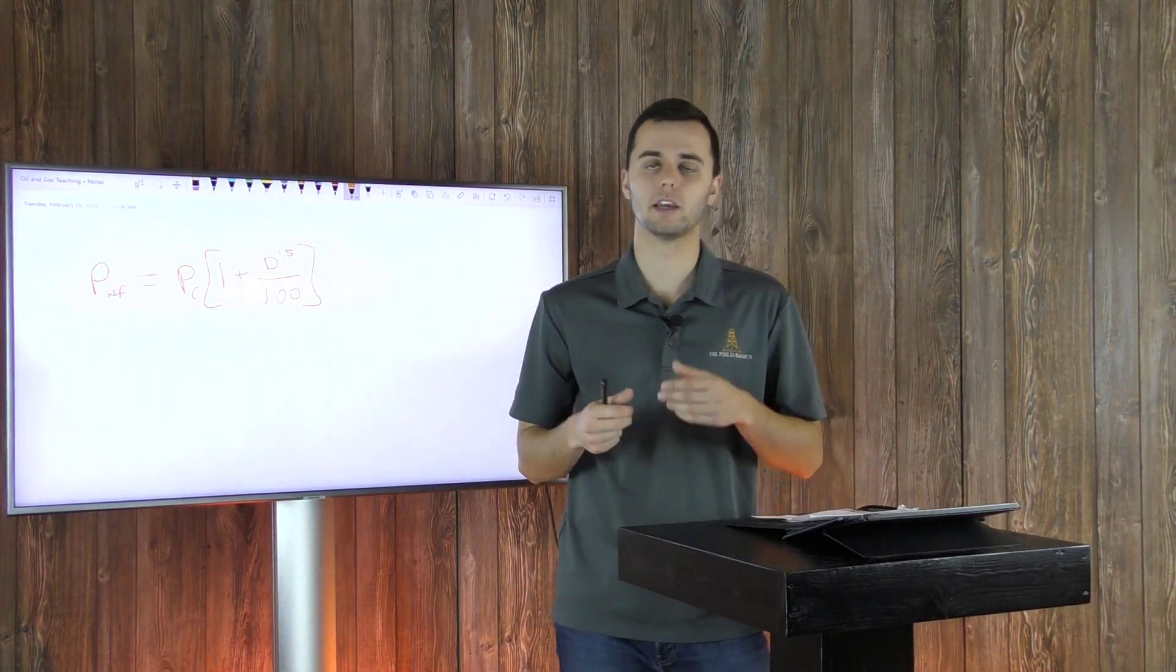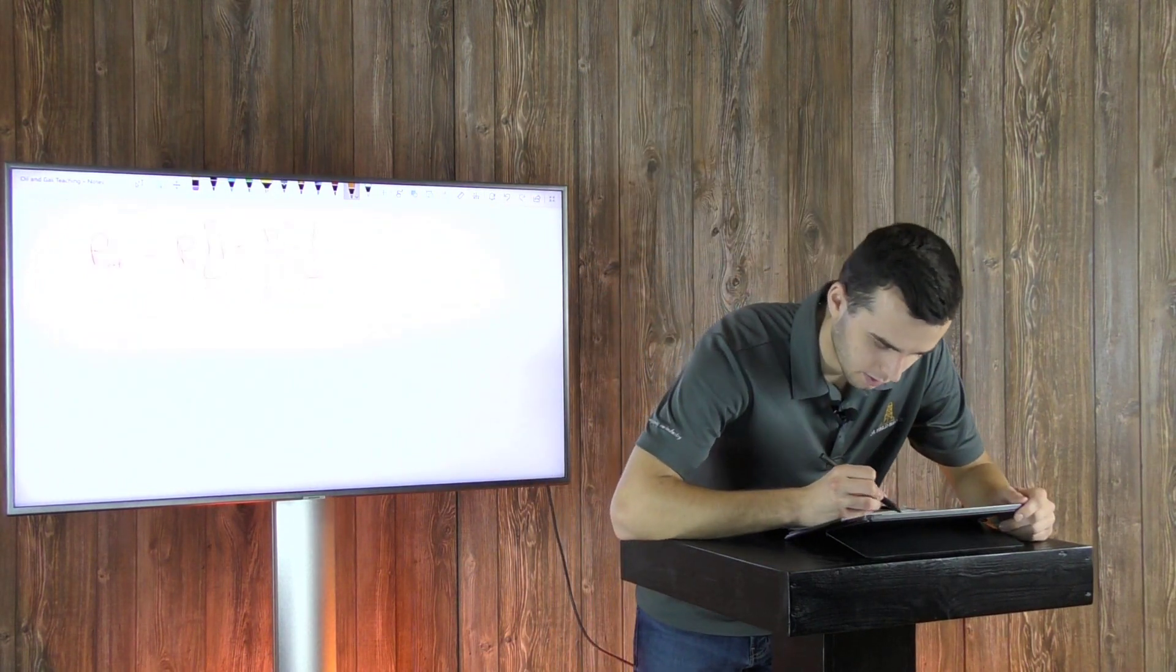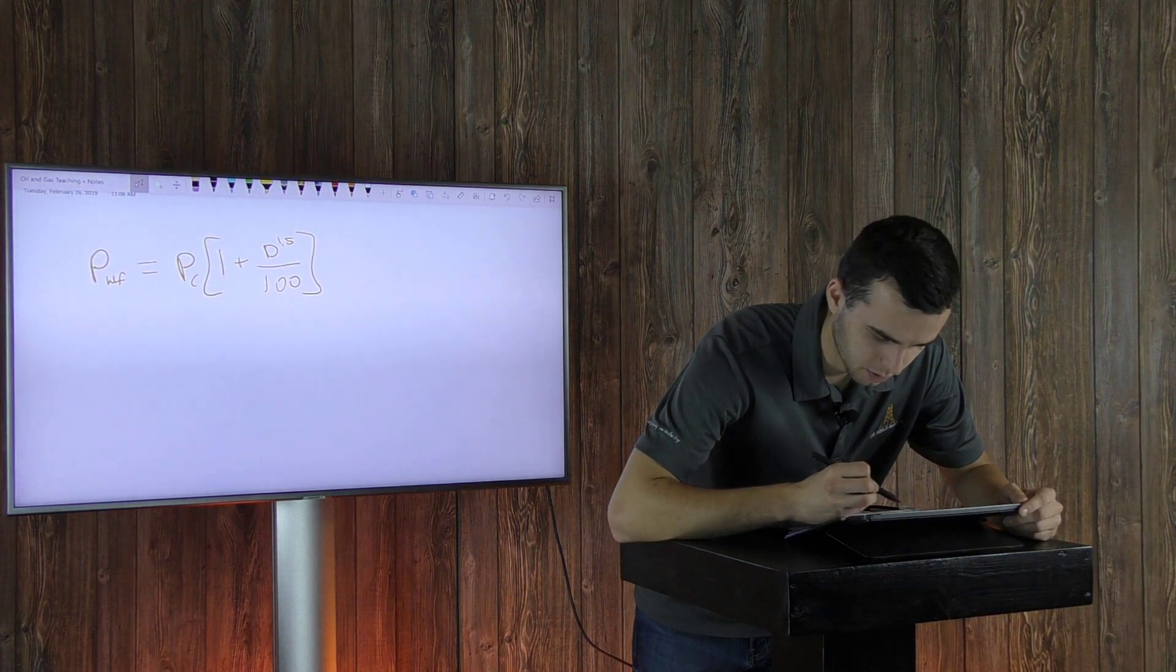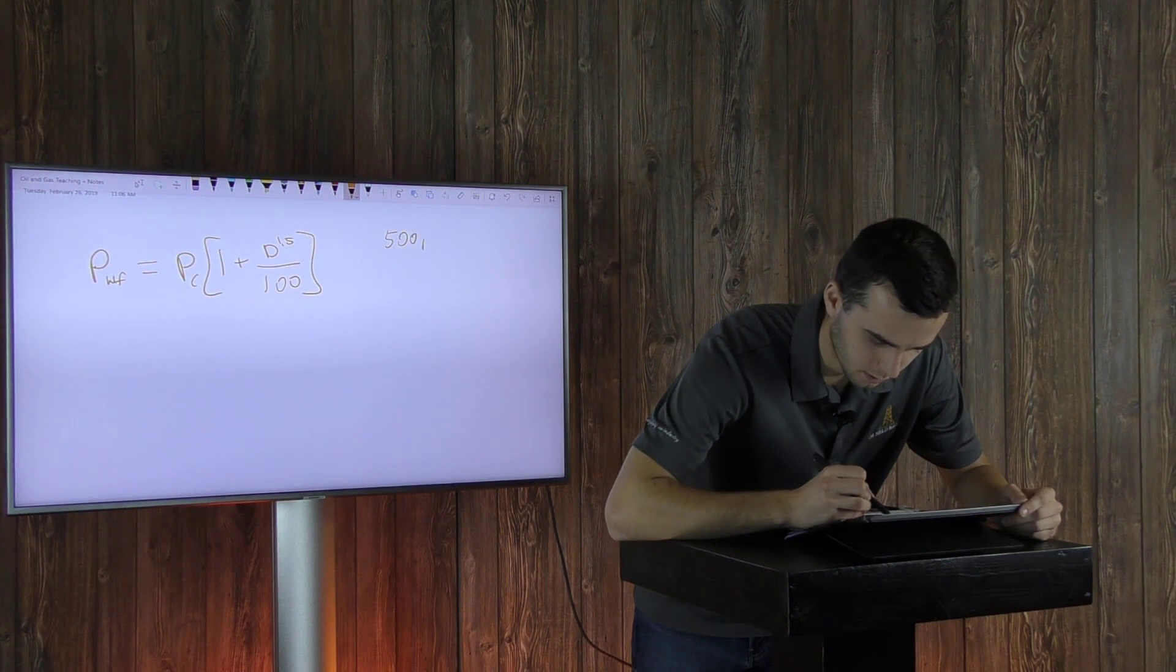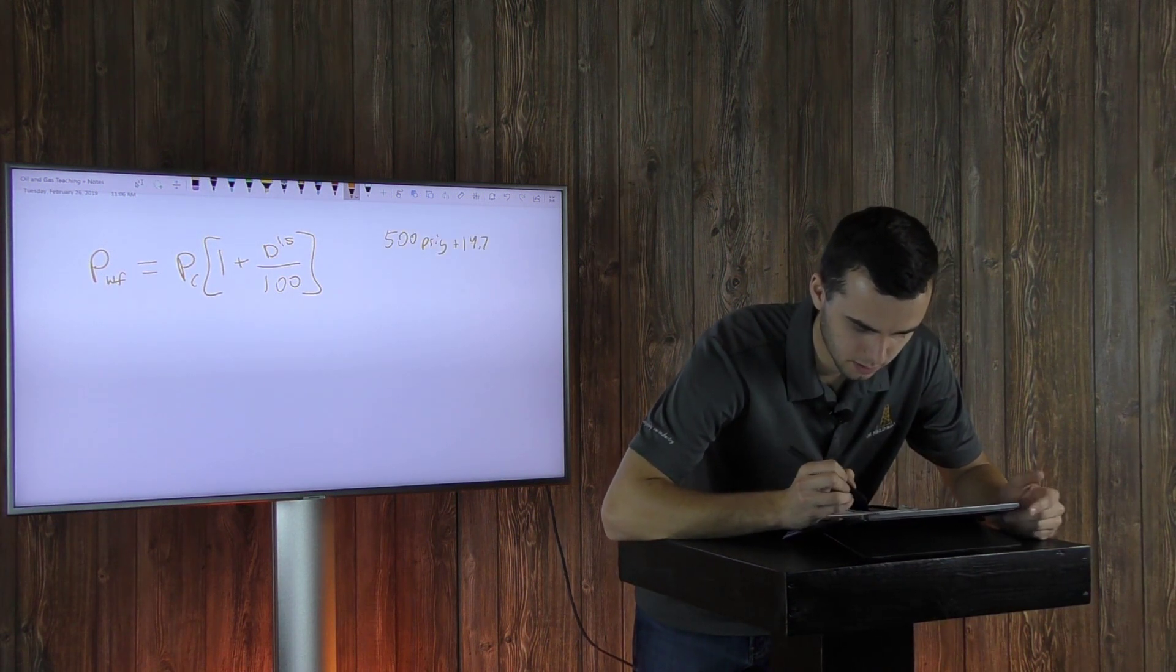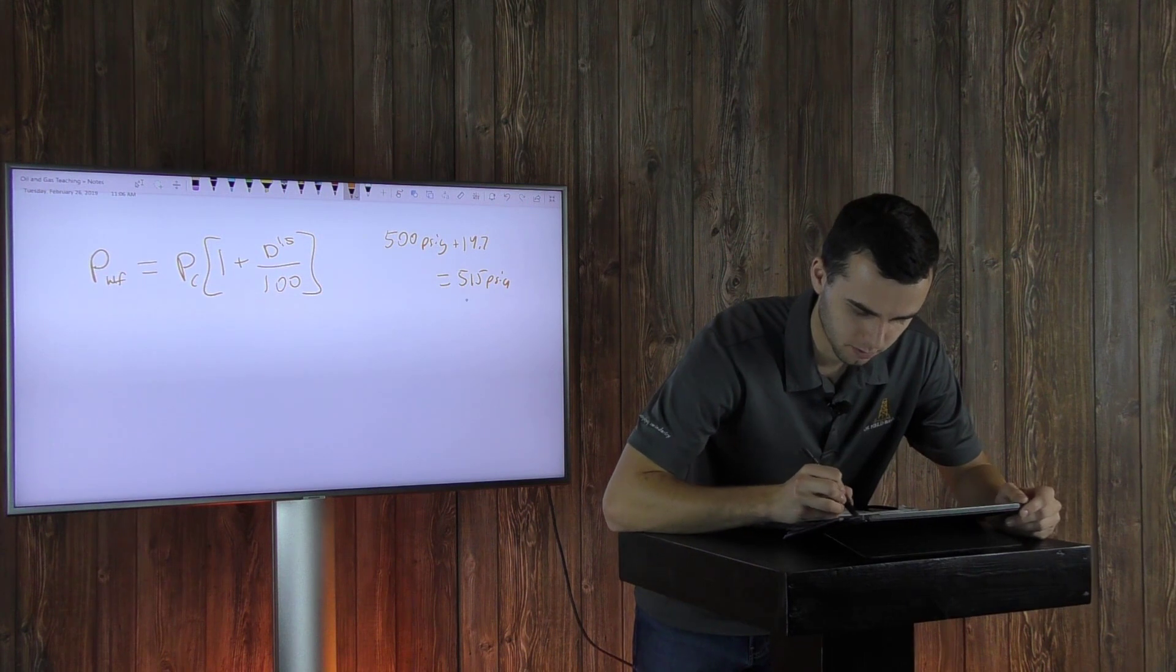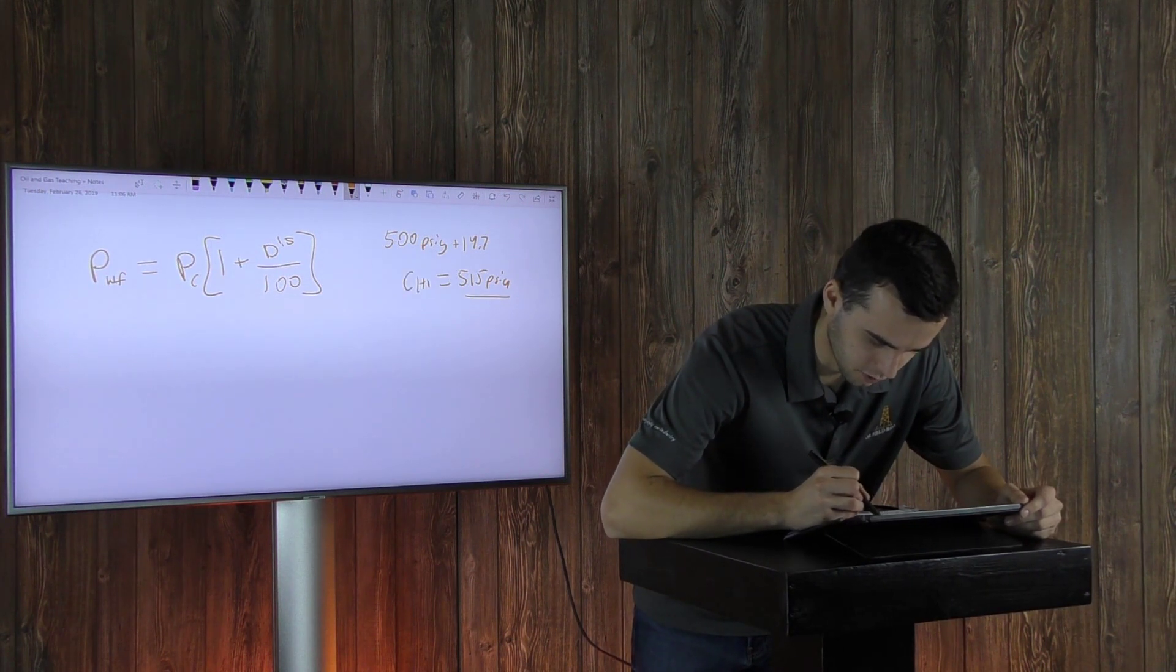So what you have to do is get your casing pressure. Let's say that your gauge casing pressure is 500 PSIG. We'll have to add 14.7 to that. Let's just call it 15 today. That's 515 PSIA, which is your casing pressure, casing head pressure.